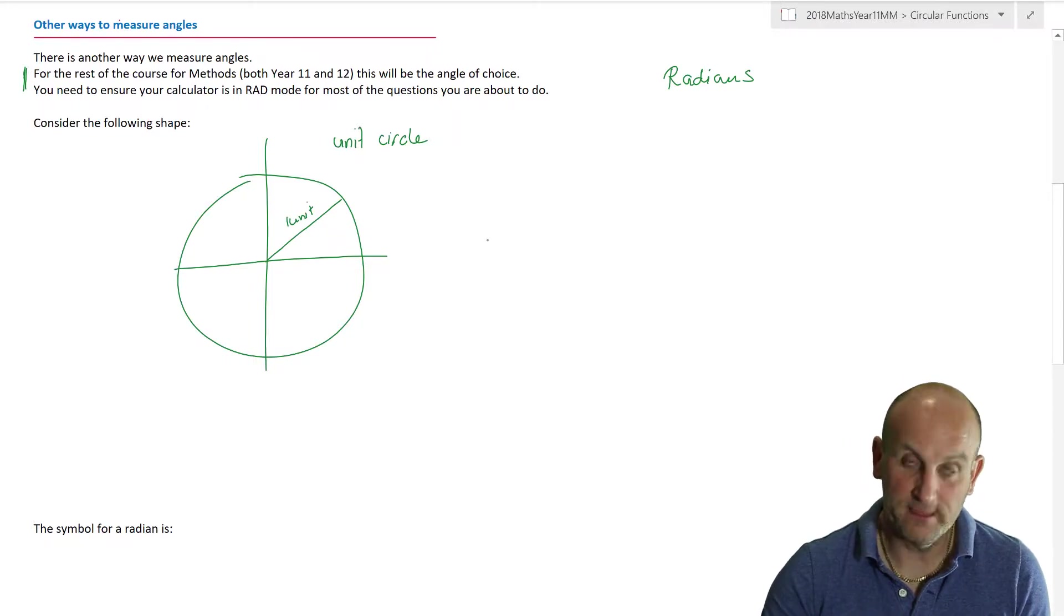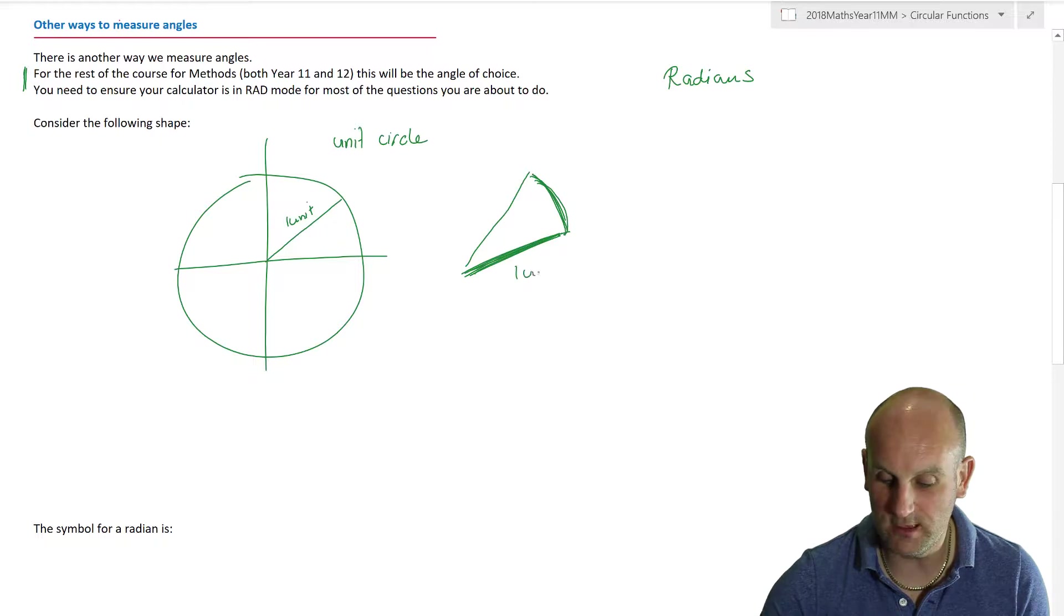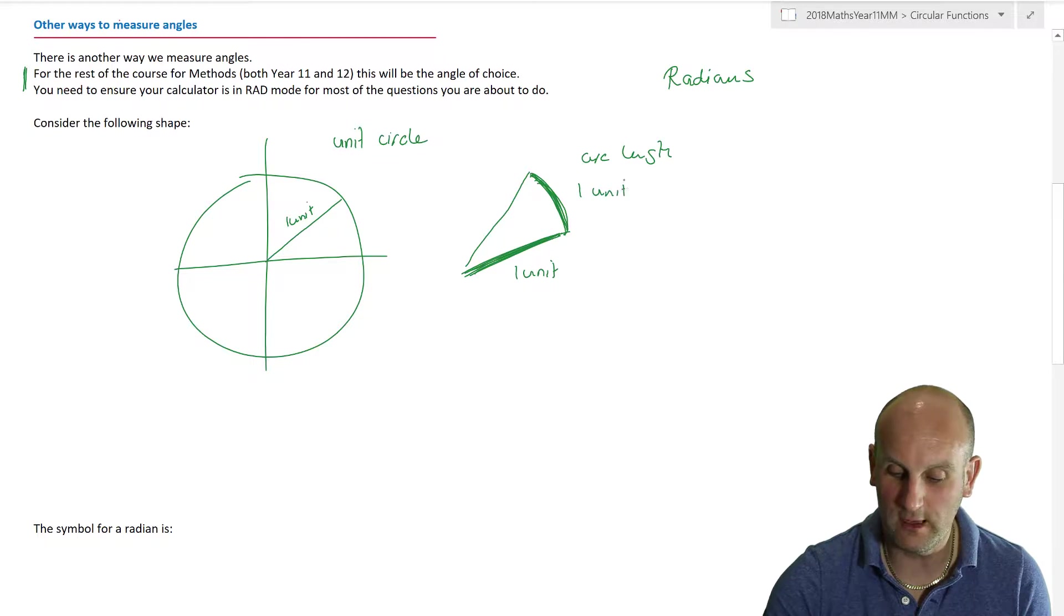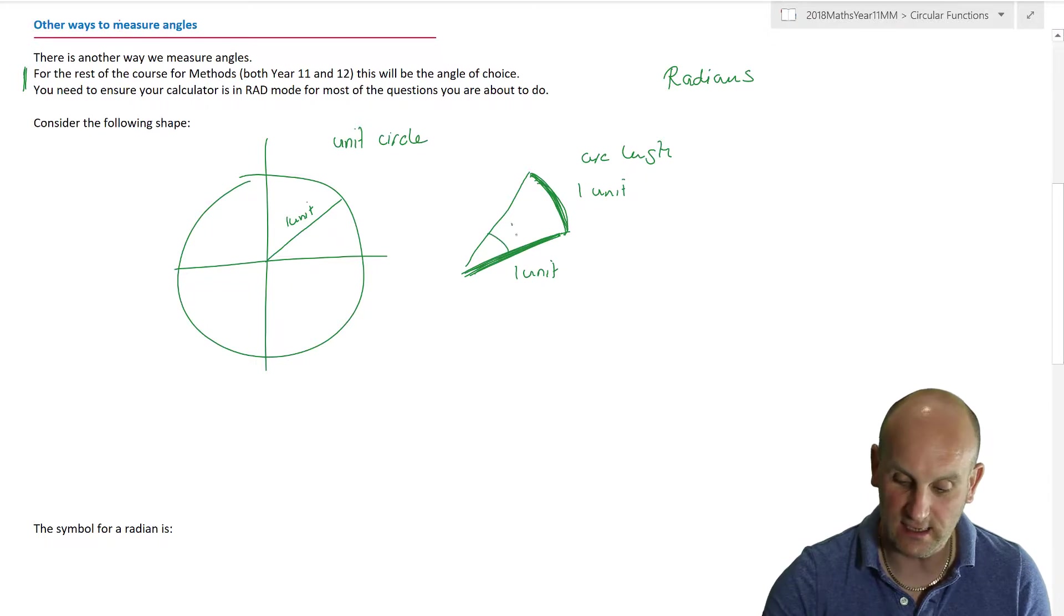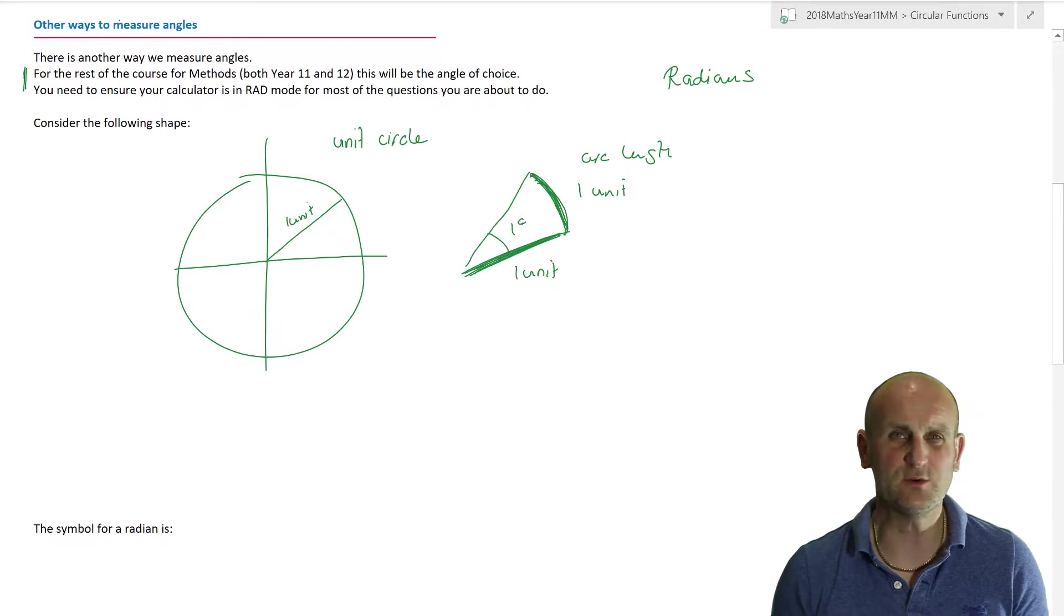A radian is such that we have a part of the circle where the length of this part here is exactly equal to that. So what I'm trying to say is if I was to have a radius of one unit, then my part of my circumference, that bit around the edge, otherwise known as my arc length, if you've done circles before, then my arc length is also one unit. And when those two are true, when I have a radius of one and an arc length of one, this here is the equivalent of one radian.